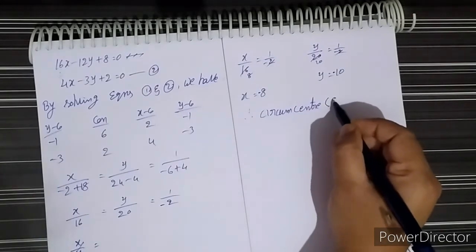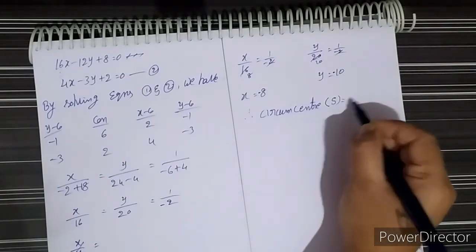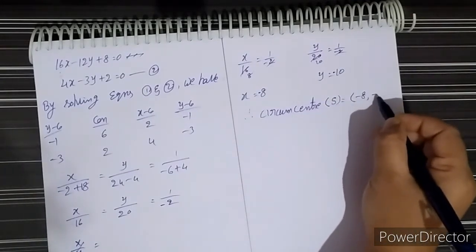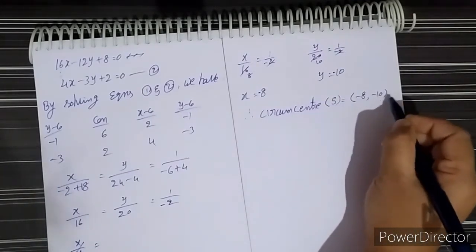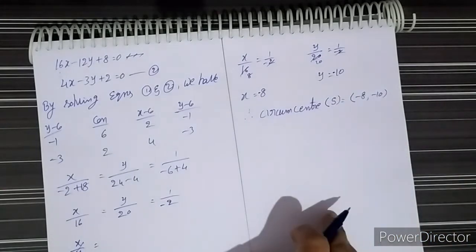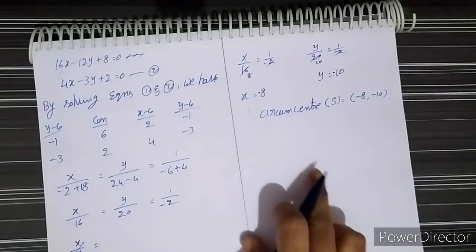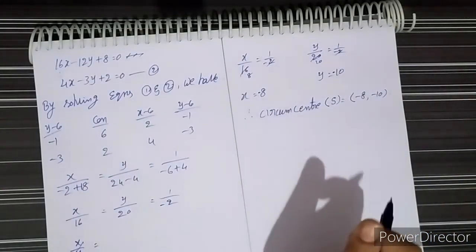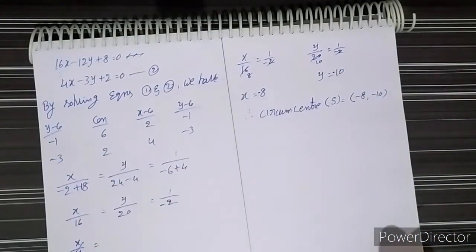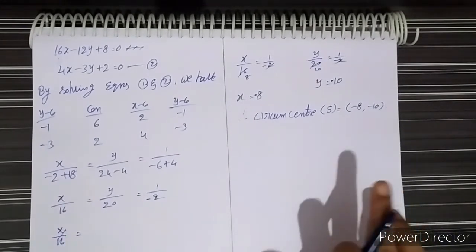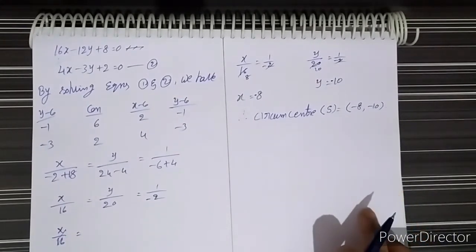The circumcenter, denoted by S, equals (-8, -10). This is the procedure for finding the circumcenter of a triangle when given the vertices of a triangle.